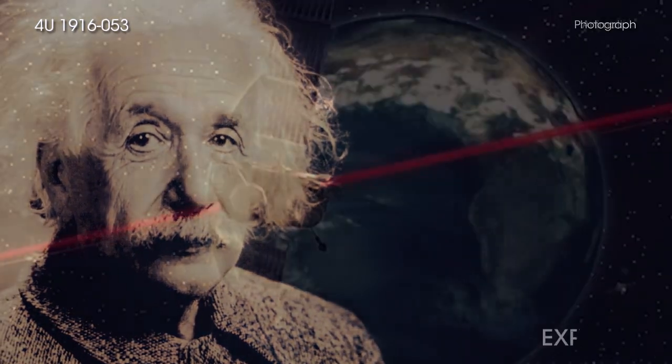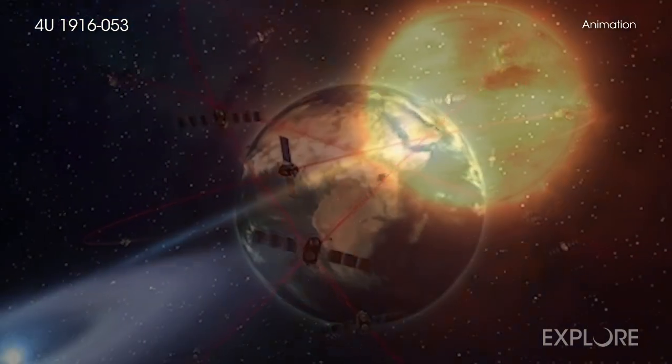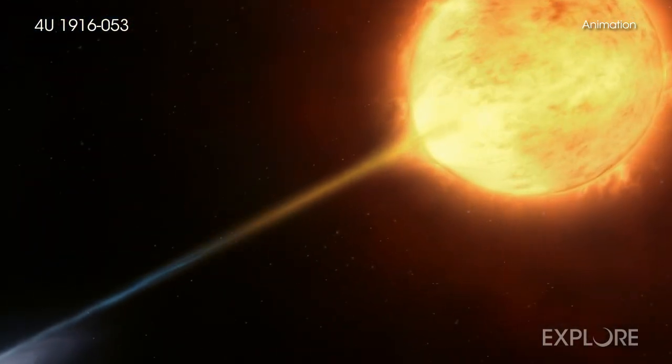What do Albert Einstein, the Global Positioning System, or GPS, and a pair of stars 200,000 trillion miles from Earth have in common?